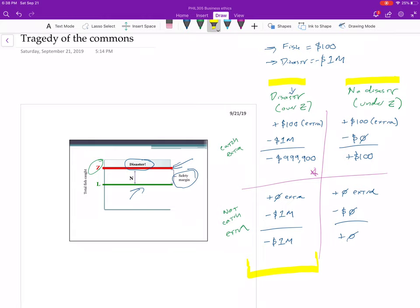If we are in the future where there is no disaster, now we're just considering this column. The choice is between gaining 100 and gaining zero. So again, the choice to catch the fish is better. So no matter which future we're in, we should catch the extra fish.